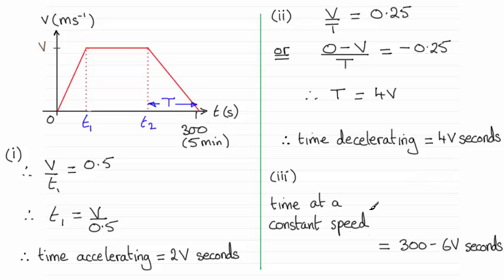Now when it comes to the time at a constant speed, that's this period of time across here, t2 minus t1. Now we know that must be all of 300. So we've got 300 equals 300 minus this time here.